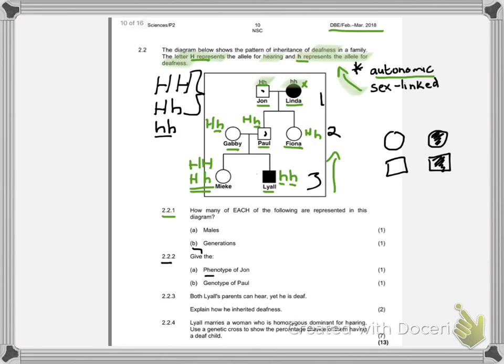Let's go on to the next question, 2.2.2, give the phenotype. Make sure you read that question carefully so that you don't give the genotype. They want to know what is the phenotype of John? John is hearing because he has a capital H with a small h, but the capital H masks that, so he can hear. So he is a hearing individual. The second question in B says give the genotype of Paul. We've actually already worked out what Paul's was earlier on. It was a capital H and a small h. So that work's already been done for us right at the beginning.